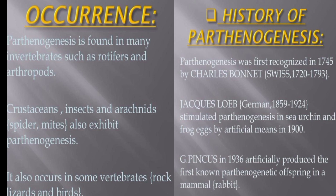Offspring having all of the mother's genetic material are called full clones, and those having only half are called half clones. Full clones are usually formed without meiosis. If meiosis occurs, the offspring will get only a fraction of the mother's alleles, since crossing over of DNA occurs during meiosis and creates variation.